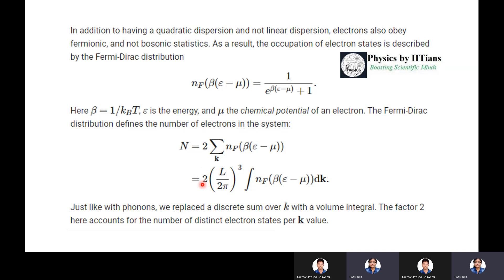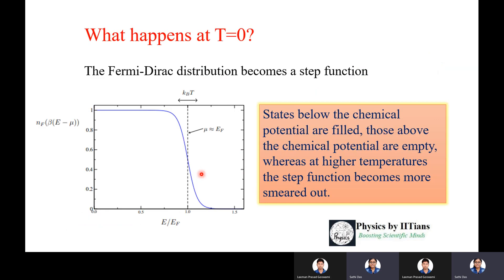At T=0, the Fermi-Dirac distribution becomes a step function: states below the chemical potential are filled and states above are empty. For a finite temperature, this step function becomes smeared out. The factor of 2 accounts for spin degeneracy — electron spin can be up or down.